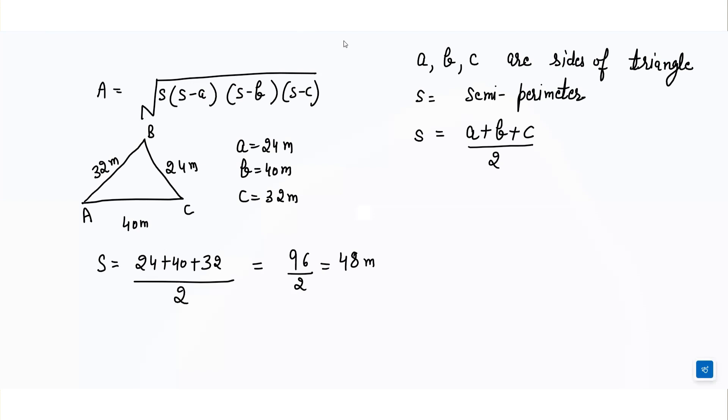Now we calculate the area. Area equals square root of s times s minus a times s minus b times s minus c. In place of s, we write 48. So 48 minus 24 is 24, 48 minus 40 is 8, and 48 minus 32 is 16.